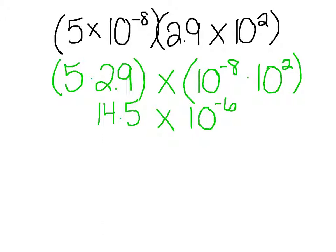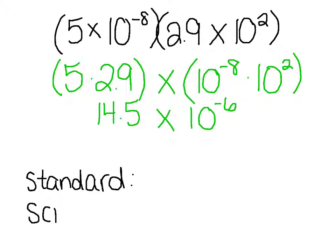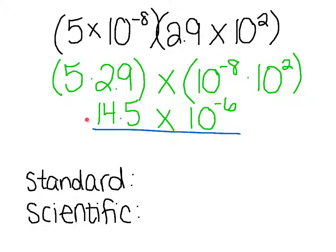When you are given these questions, commonly you're going to be asked to write them in standard form and in scientific notation form — they're going to ask you for both answers. So the first thing I want you to think about is: is this improper scientific notation? Hopefully you're looking at 14.5 and saying no, because A has to be between 0 and 10, not including 10. So 14.5 is too large. Rather than trying to change this in scientific notation directly, I like to put it in standard form first and then take that number and rewrite it in proper scientific notation. I highly advise this — I think it's the best way to do it.